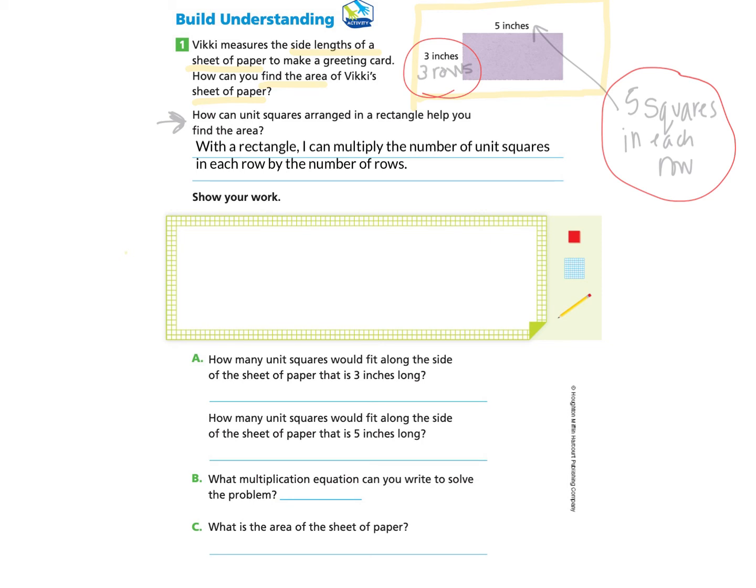With a rectangle, I can multiply the number of unit squares in each row by the number of rows. So I can now show my work in the rectangle below. I can draw that there are 5 squares in each row and there are 3 rows. I can create a multiplication equation from this drawing: 3 rows times 5 squares in each row. 3 times 5, I can count by 3's five times, and I will always get 15.